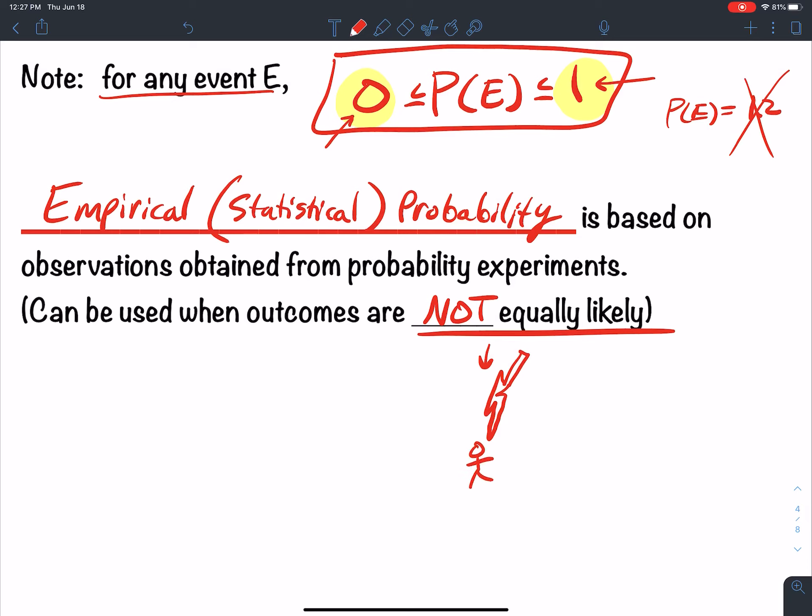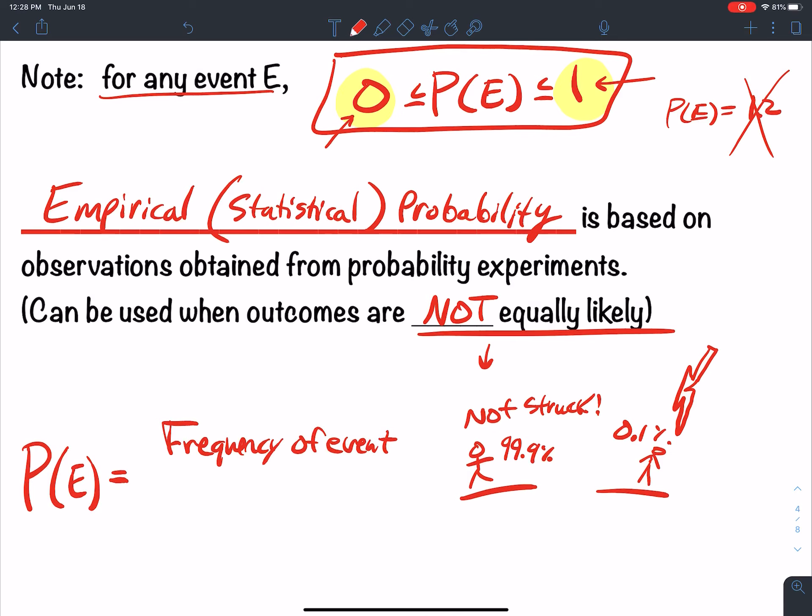So you're much more likely to never get struck by lightning. You got like a 99.9% chance of never getting struck versus that 0.1% chance of the people who do get struck by lightning. So you're a lot more likely to never be struck by lightning than you are to get hit by a lightning bolt. So not all events are equally likely. So statistical probability, empirical probability, relies off of frequencies. So the probability of an event E occurring is the frequency of the event E divided by the total frequency.